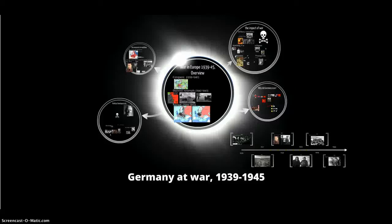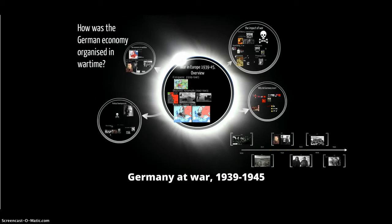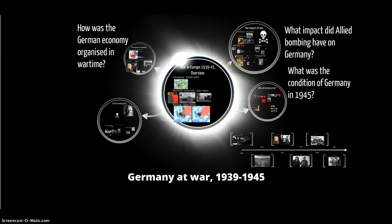This is the last lesson of our From Second Reich to Third Reich study unit: Germany at war between 1939 and 1945. The key questions for this lesson are: How was the German economy organised in wartime? What impact did Allied bombing have on Germany? What was the condition of Germany in 1945? And why did Germany lose the war?